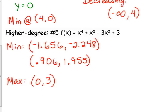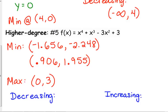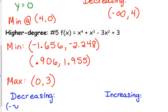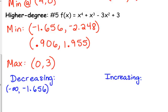I start on the left side of the function. Starting from negative infinity until I get to that minimum, my function is decreasing. So from negative infinity to the x-coordinate of that first minimum, my function is decreasing. Then it's increasing from negative 1.656 to my maximum at 0.